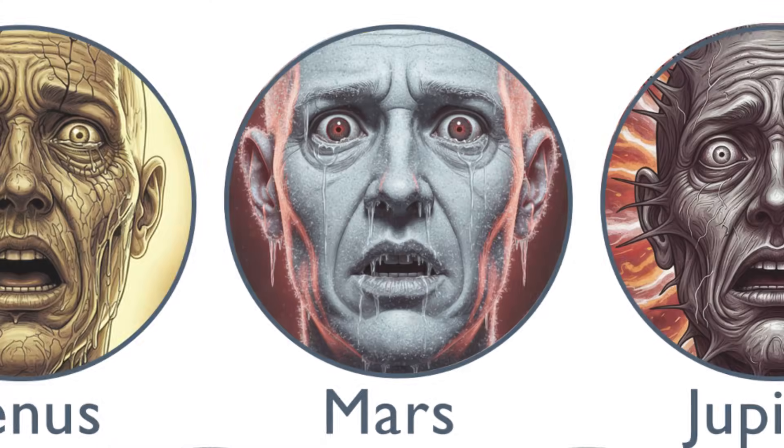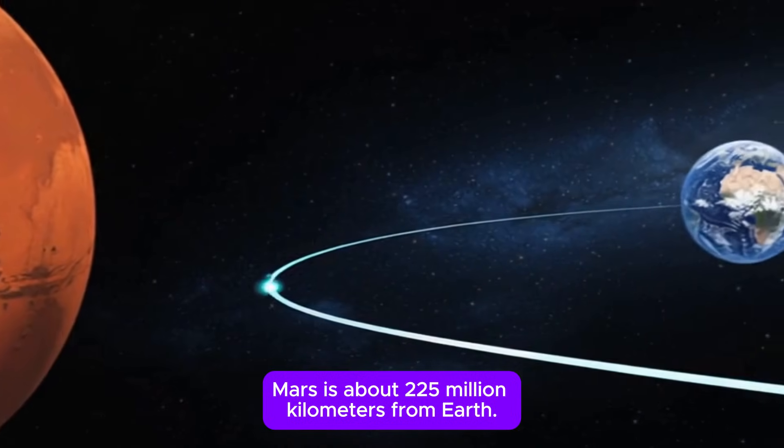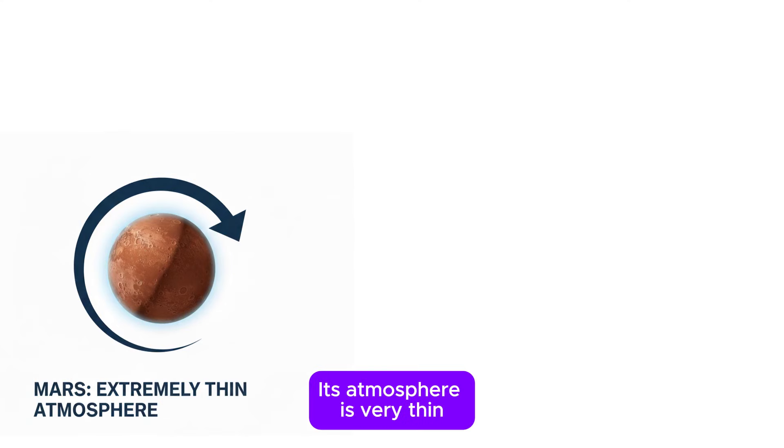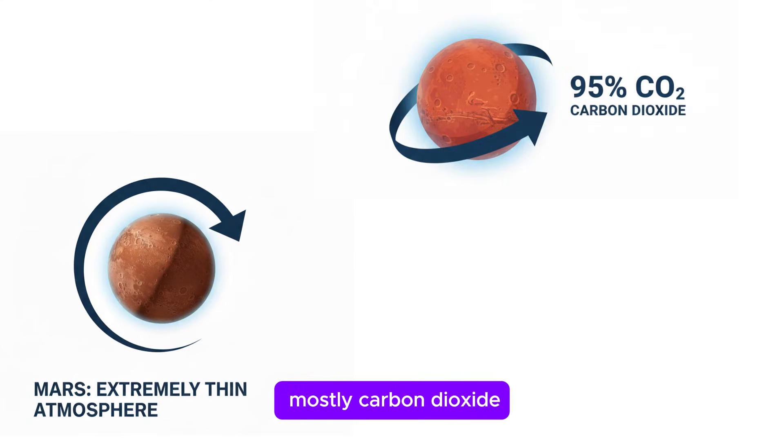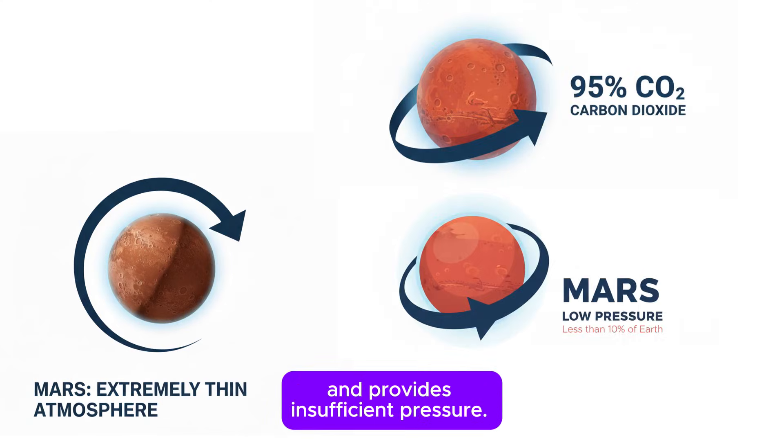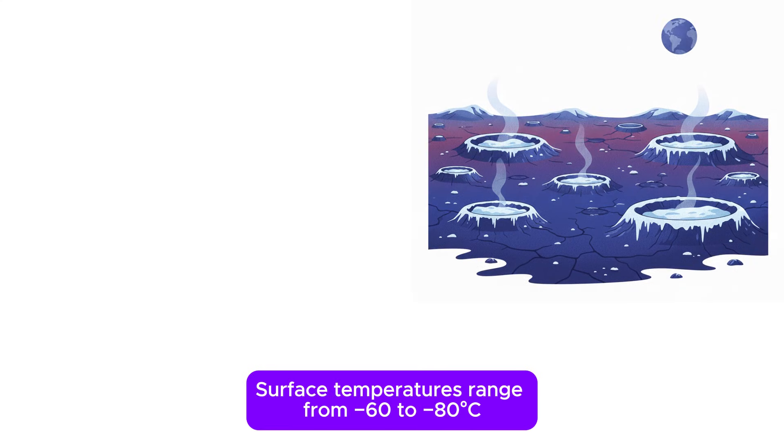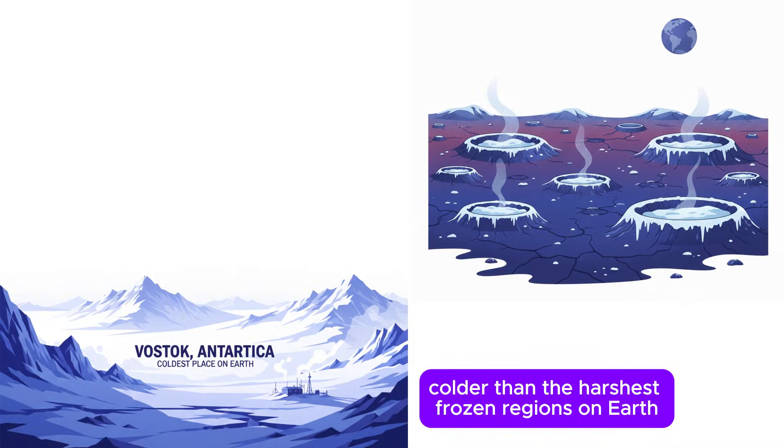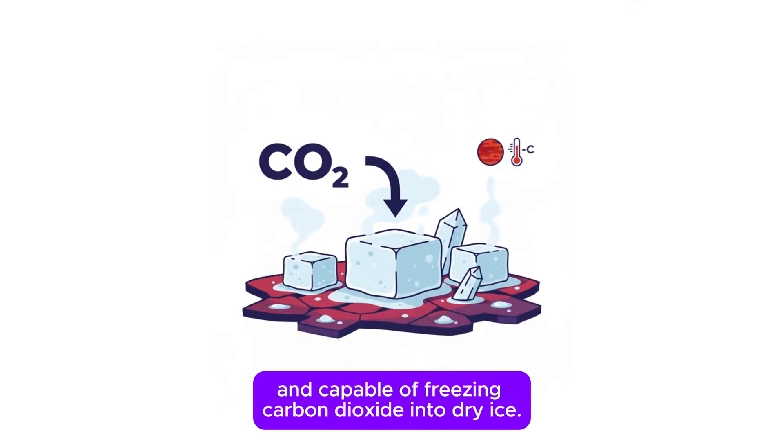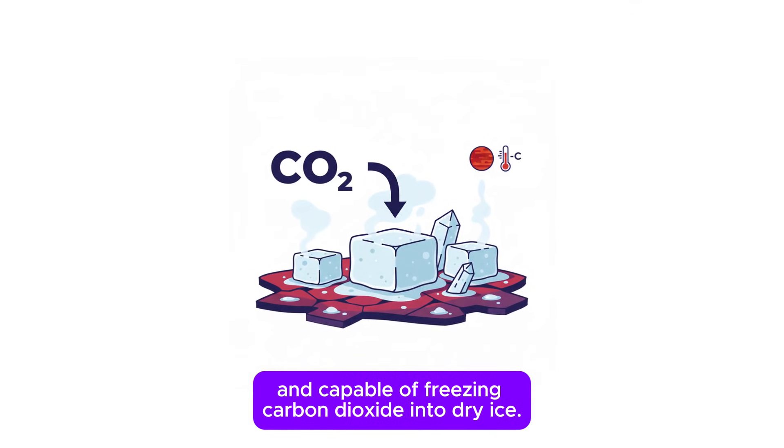Mars. Mars is about 225 million kilometers from Earth. Its atmosphere is very thin, mostly carbon dioxide, and provides insufficient pressure. Surface temperatures range from negative 60 to negative 80 degrees Celsius, colder than the harshest frozen regions on Earth and capable of freezing carbon dioxide into dry ice.